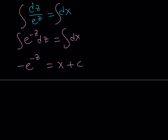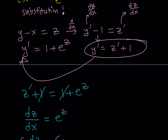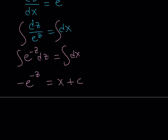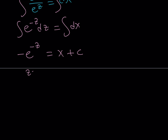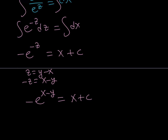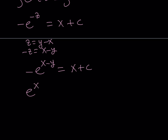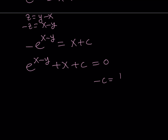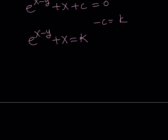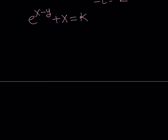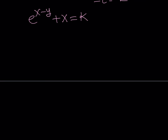Now we have to back-substitute. What is z? z is equal to y minus x. So I replace z with y minus x. Since z equals y minus x, negative z is x minus y. So this becomes negative e to the power x minus y equals x plus c. And if you wanted to put everything on the same side, you could write e to the power x minus y plus x plus c equals 0. Since c is a constant, calling negative c equal to k, you can also write this as e to the power x minus y plus x equals k. Those are all the solutions. There's no way to make this more explicit — we can't really get y by itself, so we have to leave it like this.